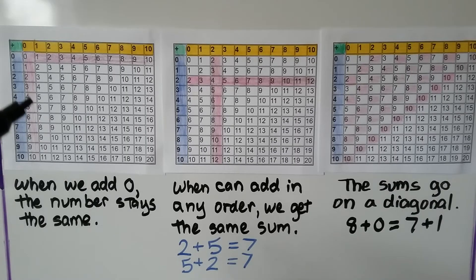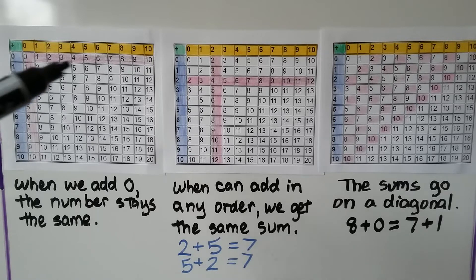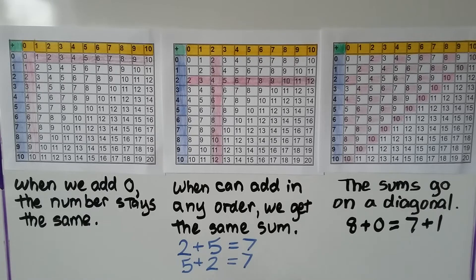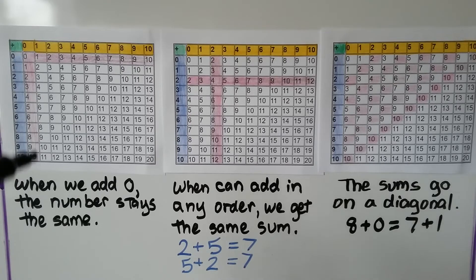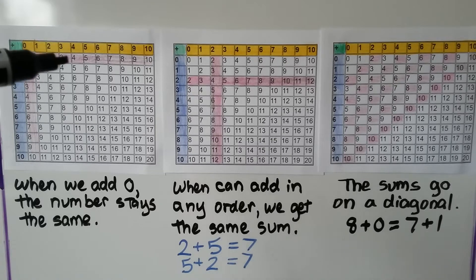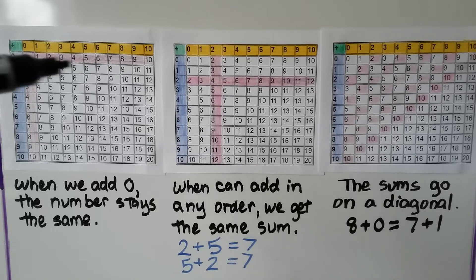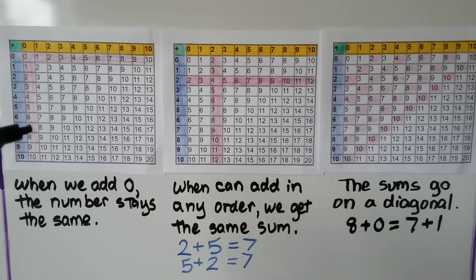Take a look at this addition table — see how it's filled in pink here and here, underneath the yellow and next to the blue. When we add 0 to another addend, the number will stay the same. Our sum will be the same as the addend we added 0 to. So here we have a 4 — if we add 0 to it, it stays 4. Here we have a 6, we add 0 to it, it stays 6. Even if we go this way, 0 plus 7 is 7.